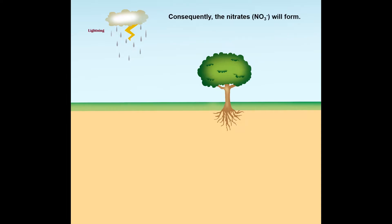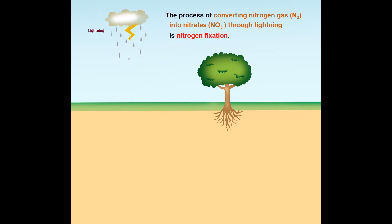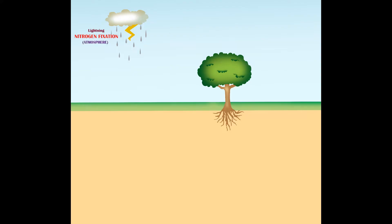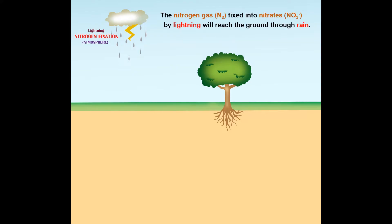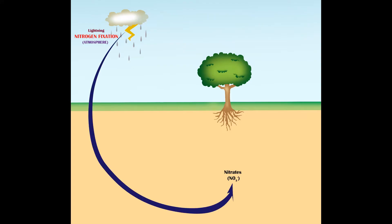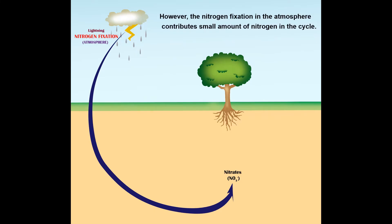Consequently, nitrates will form. This process of converting nitrogen gas into nitrates through lightning is nitrogen fixation in the atmosphere. The nitrogen fixed into nitrates by the lightning will reach the ground through rain. However, nitrogen fixation in the atmosphere contributes only a small amount of nitrogen in the cycle.